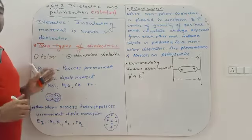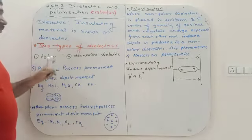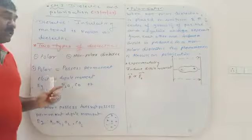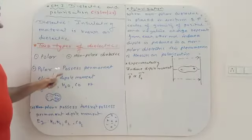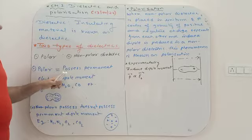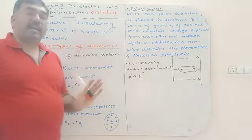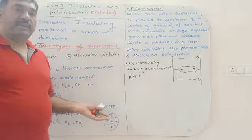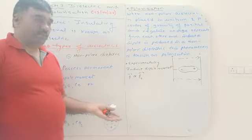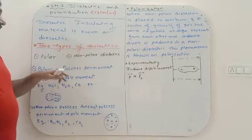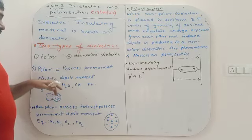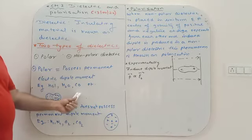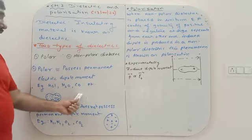Basically there are two types of dielectric: polar and non-polar. Polar dielectrics are those which possess a permanent electric dipole moment. Dipole moment is charge multiplied by the distance between the two charges. Examples of polar dielectrics include HCl, water, and CO.